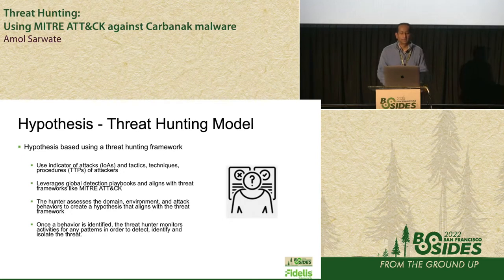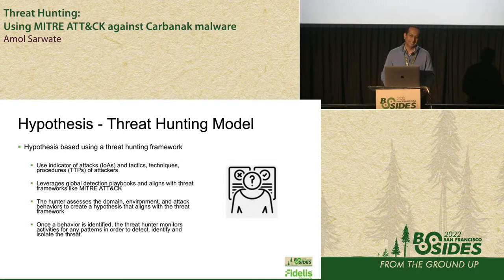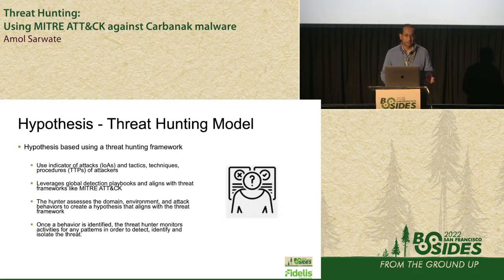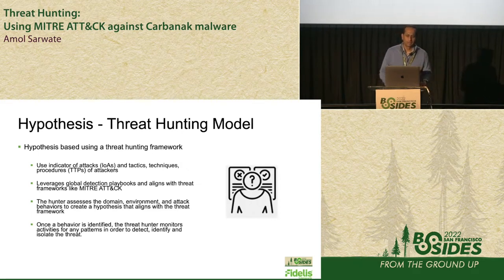The third model is a hypothesis-based model. A threat hunter uses indicator of attacks or IOAs and TTPs — tactics, techniques, and procedures — and uses some sort of a framework like the MITRE ATT&CK framework for threat hunting. But there is no rule saying you use only one of them. You can use all of them, interchange them, because attackers do not stick to a certain set of rules, so there is no reason why a threat hunter has to stick to one or the other.